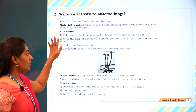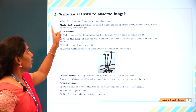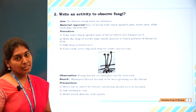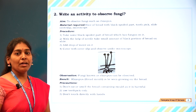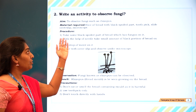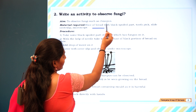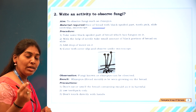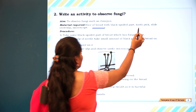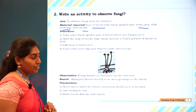Our aim is to observe the fungi Rhizopus. The scientific name of bread mold is Rhizopus. Materials required: a slice of spoiled bread with black growth, a toothpick, a cover slip, and a microscope to observe.